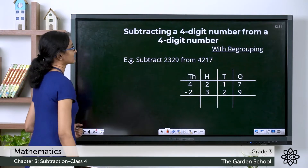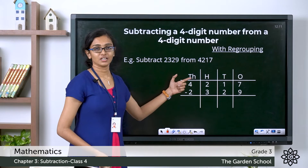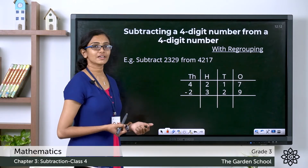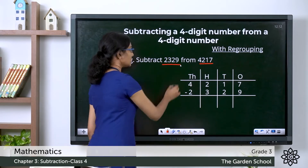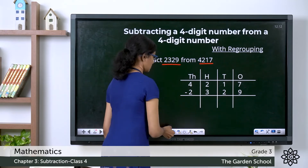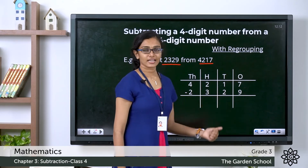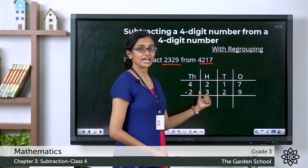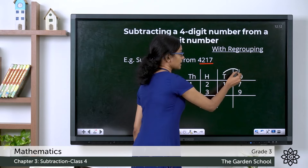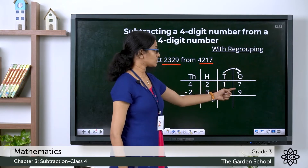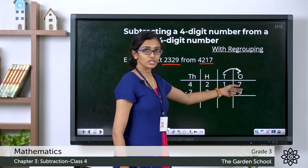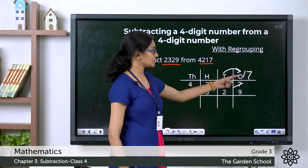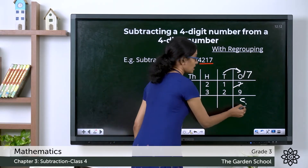I hope your answers are correct. Now let's see a different case — we'll see subtraction with regrouping. Look at this example: subtract 2329 from 4217. Here 4217 is the minuend and 2329 is the subtrahend. Here we have 7 ones minus 9 ones. You cannot take away 9 from 7, so you borrow from the next higher place on the left. You borrow 1 ten from the tens place and give it to the ones place, making it 17 ones. So now 17 ones minus 9 ones gives you 8 ones.